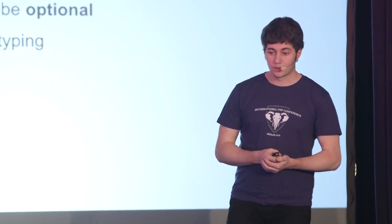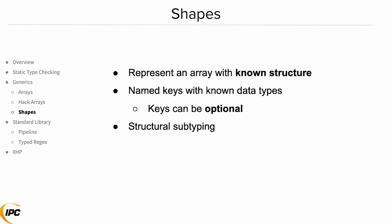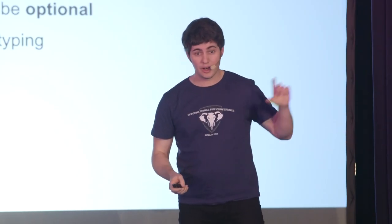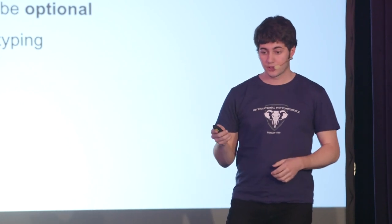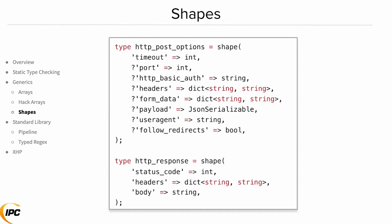We have shapes in Hack. Shapes are a new data structure that represent an array with a known structure — you know what keys you expect to be there and what the types of those values should be. Some keys can be optional as well. At runtime, these are still just PHP arrays, which is very convenient because if you get data back from an API call or from a JSON decode, you can assert that it matches a shape structure. The shape definitions are type definitions where we have the name of a shape and a list of the keys that can be present. A common use case is options for an HTTP POST function: there are a million different ways to do a POST request, and you end up with a lot of optional arguments rather than separate function arguments.